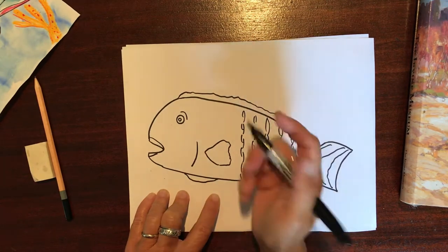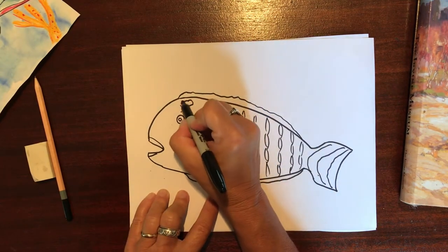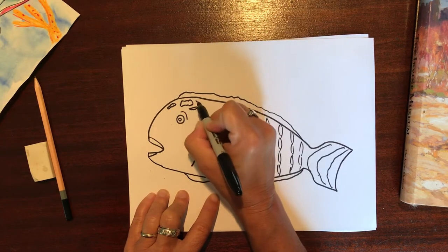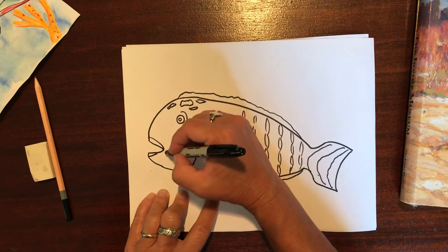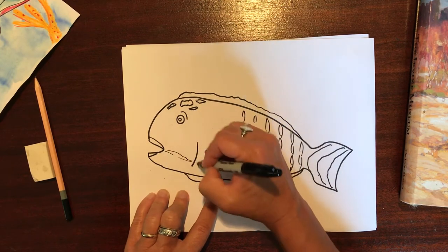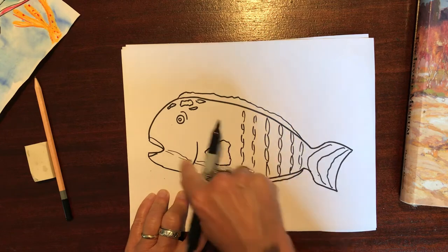And then you could just put some free form shapes around here, and they have lots of times a nice little free form stripe that goes along the side of the fish. Again, lots of things to color.